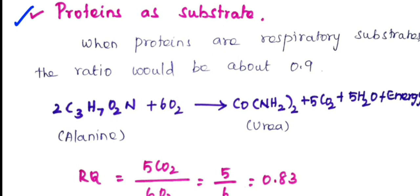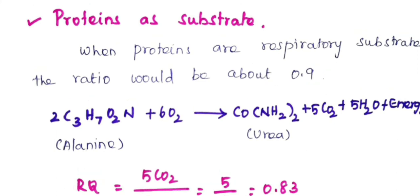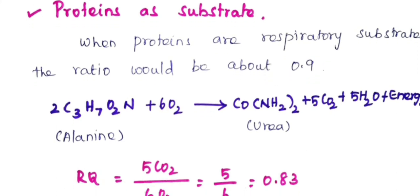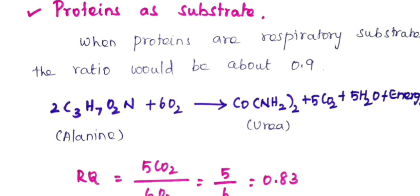Next we will calculate RQ for protein. When protein is the respiratory substrate, the RQ will be about 0.9. So, for carbohydrates RQ is 1, for fat it is 0.7, and for protein it is about 0.9.